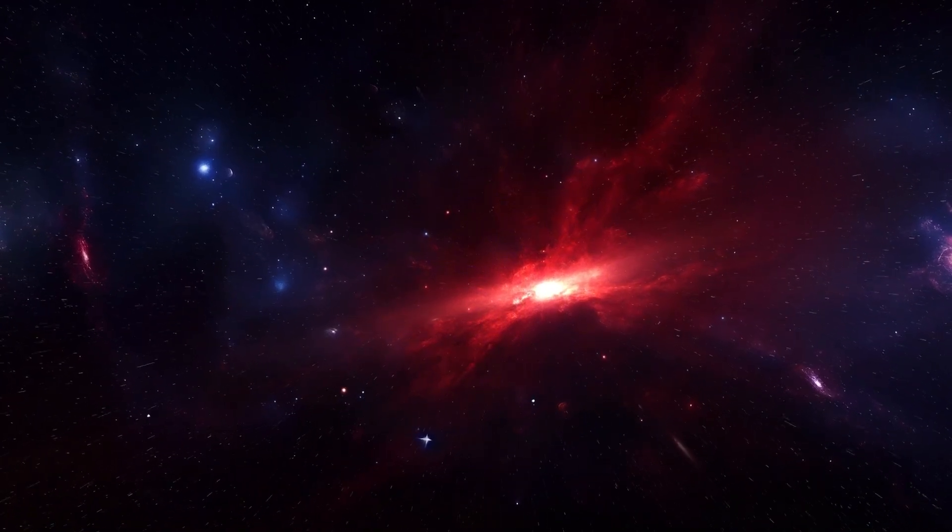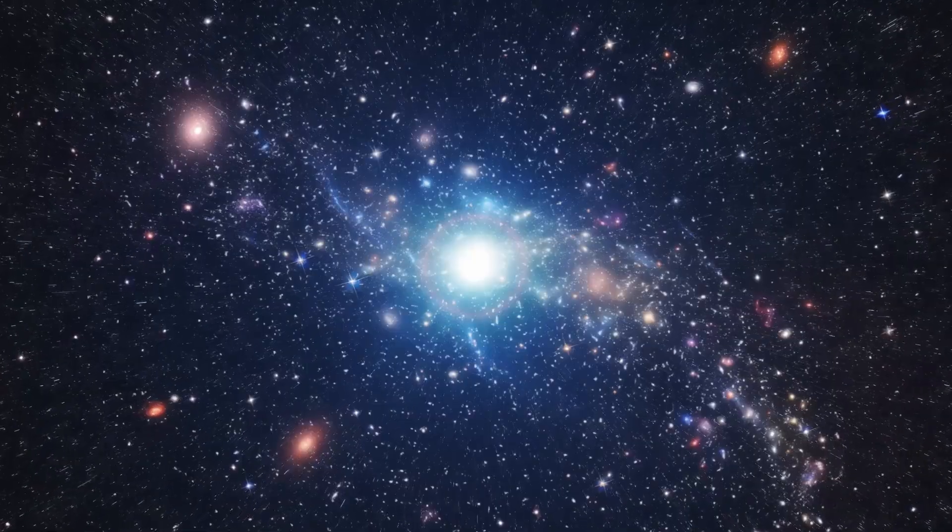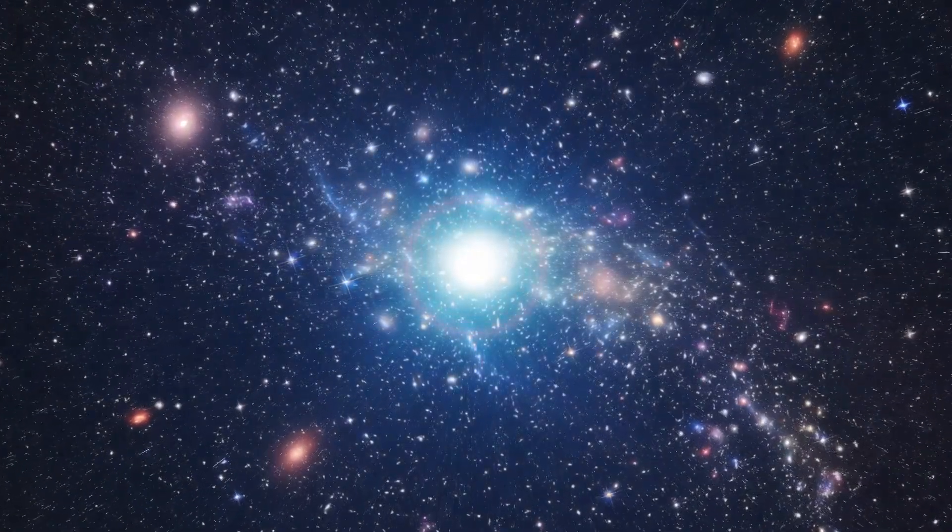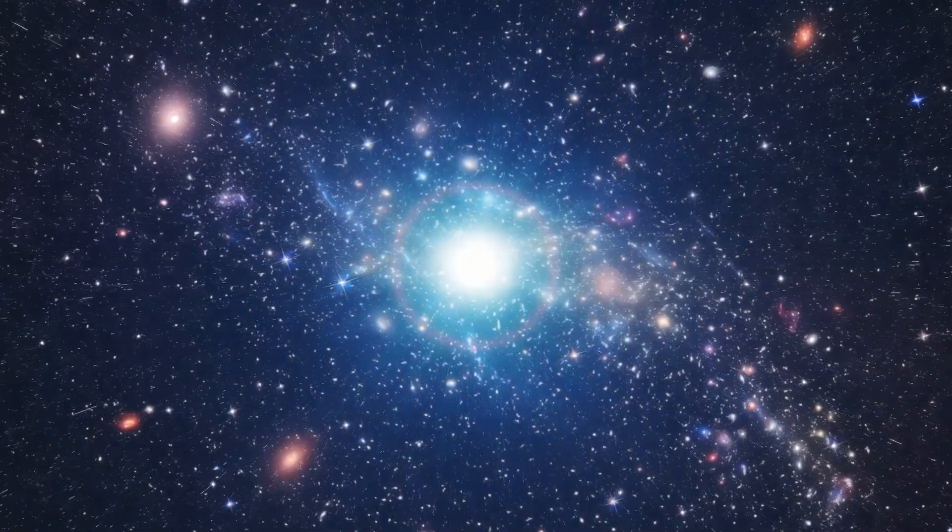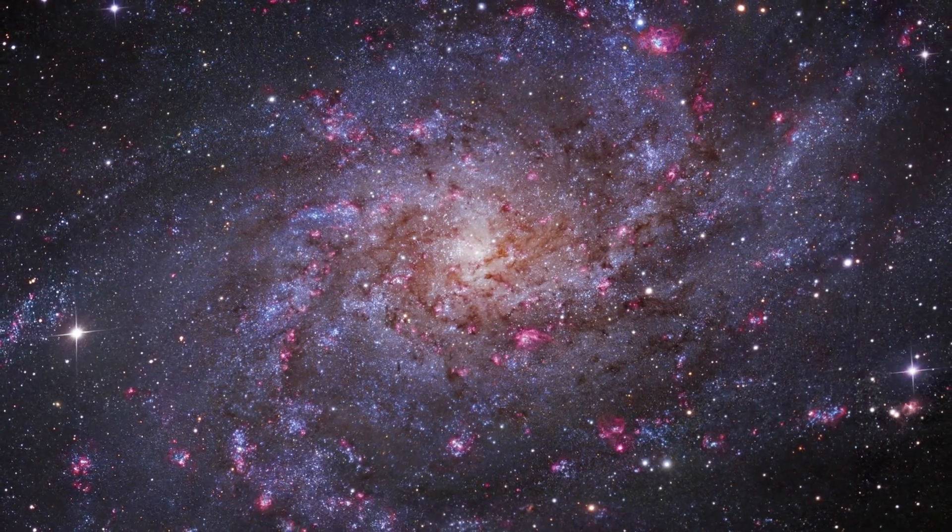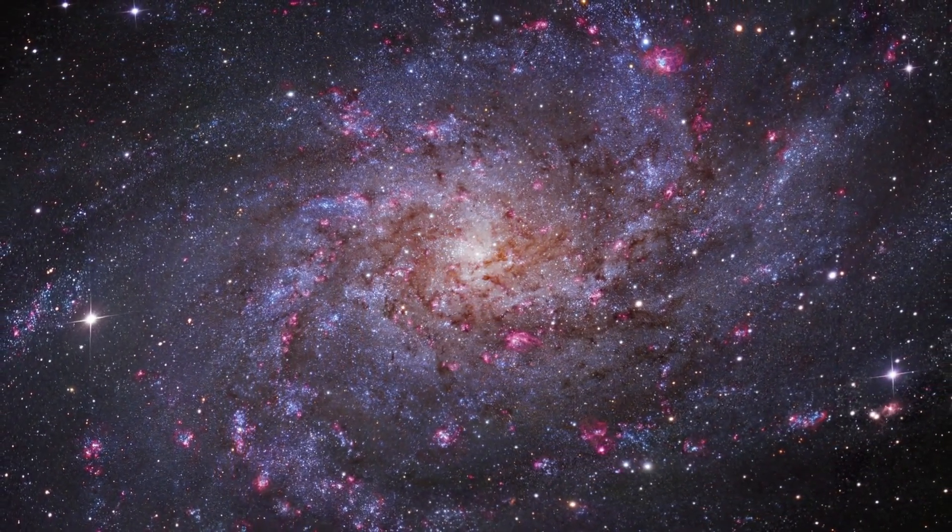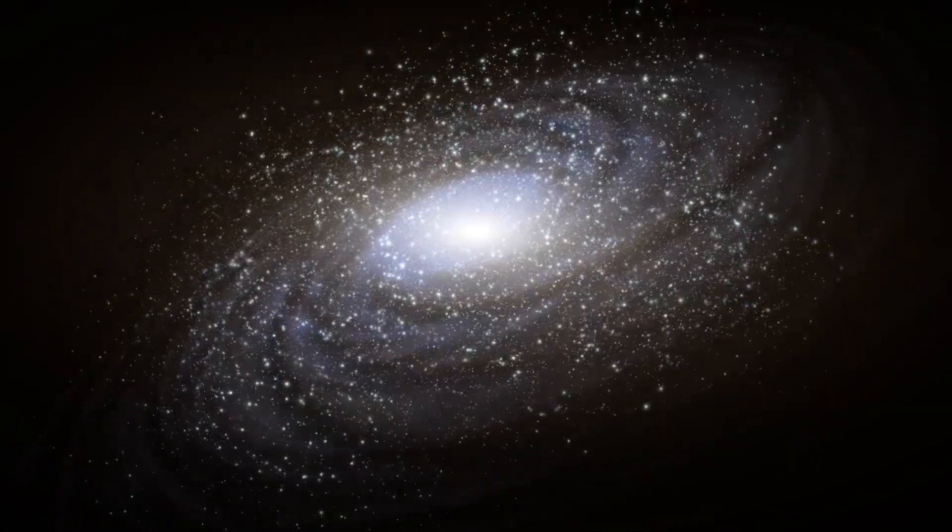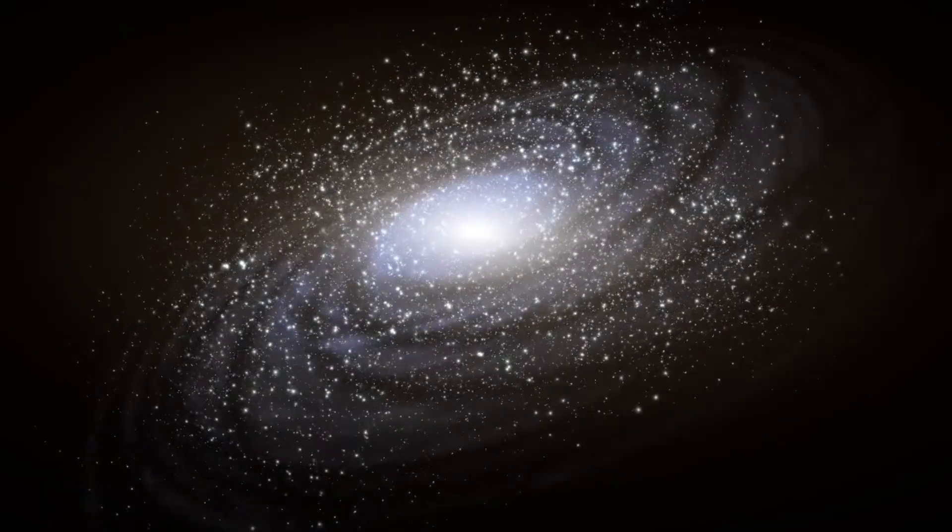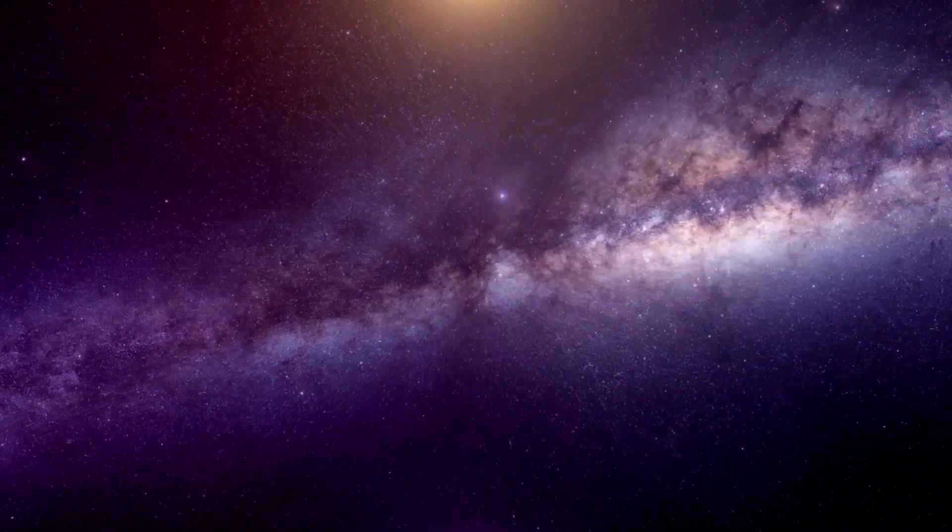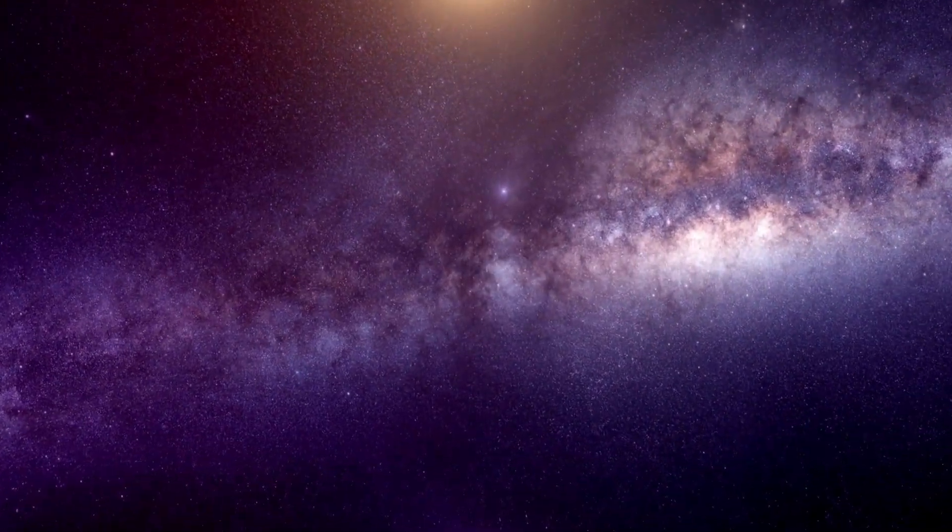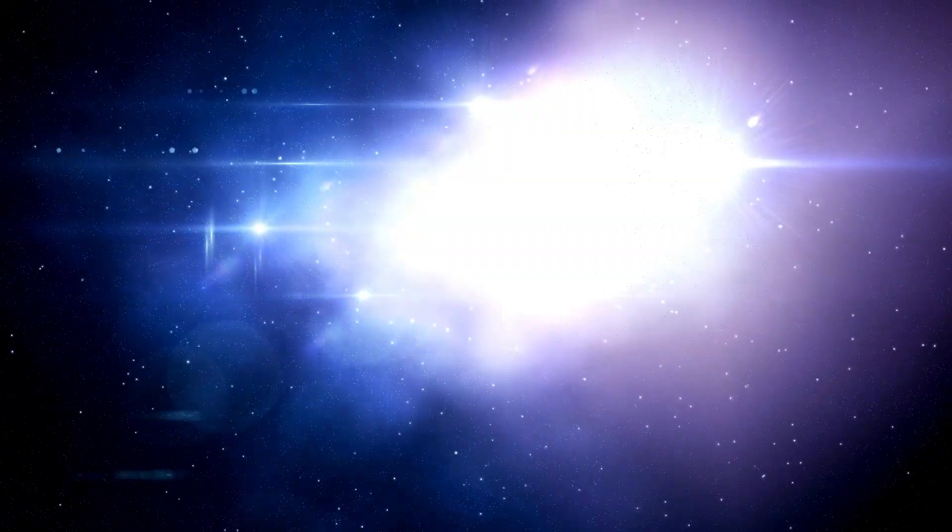Though Betelgeuse is already in the late stages of stellar evolution, it's important to note that its life cycle has been far more rapid than that of our sun. While our sun will gradually transition into a red giant and spend billions of years in that phase, Betelgeuse has already exhausted much of its hydrogen fuel. This brief, energetic life has led to the formation of heavy elements in Betelgeuse's core, elements that will be released into space when the star explodes in a supernova.